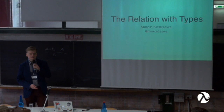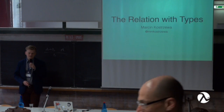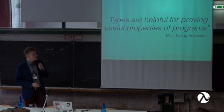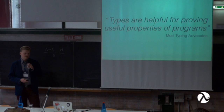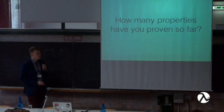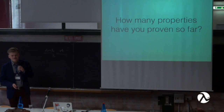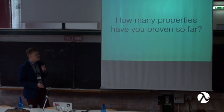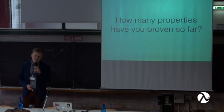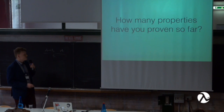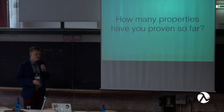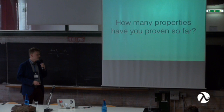If you have ever witnessed a debate between static and dynamic typing advocates, you have probably heard the argument that types are helpful for proving useful properties of your programs. This is definitely true — types are helpful for that. But the other question is: how many properties have you actually proven so far? For most of the functional programming community, the answer is close to zero. My goal today is to change this and show you how you can actually prove something using your types, and what you can infer from a function's type signature — what you can know just by knowing a function's type.